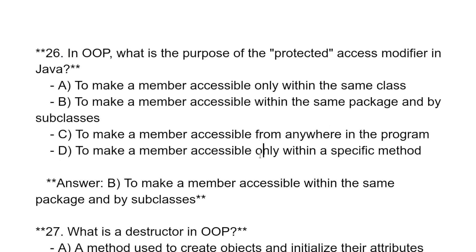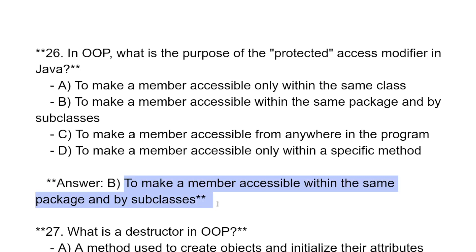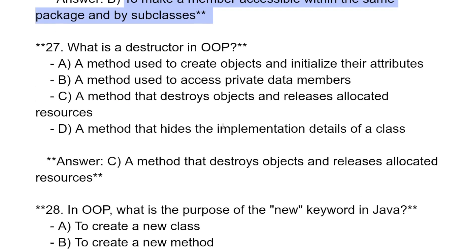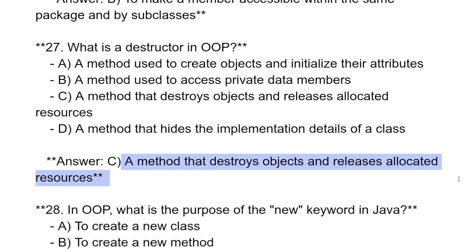The next question: In OOP, what is the purpose of the protected access modifier in Java? Protected means to make a member accessible within the same package and by subclasses. What is the destructor in OOP? A method that destroys the object and releases the allocated resource is called the destructor.